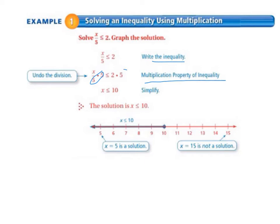So 5 times 5 leaves x by itself and 5 times 2 on the right leaves 10 on the right-hand side. So when we simplify, we have x is less than or equal to 10.